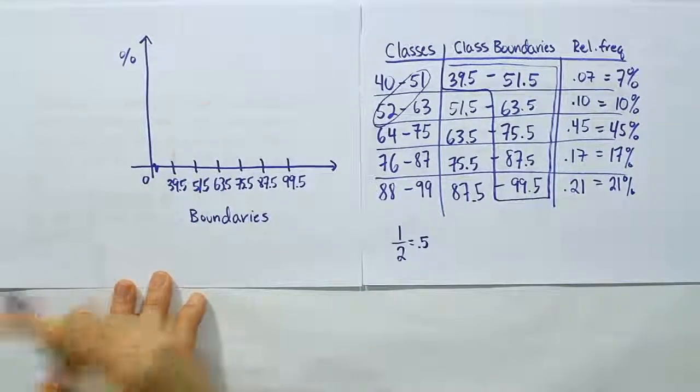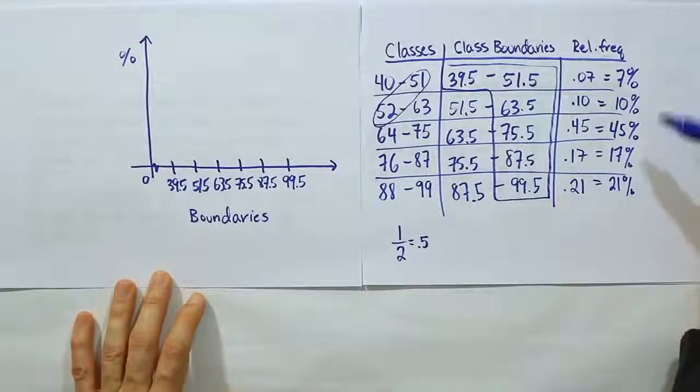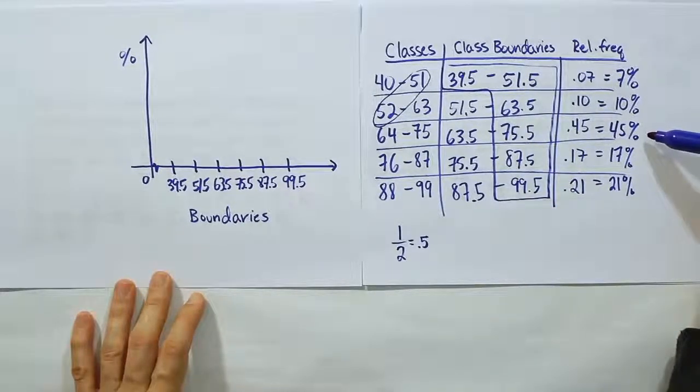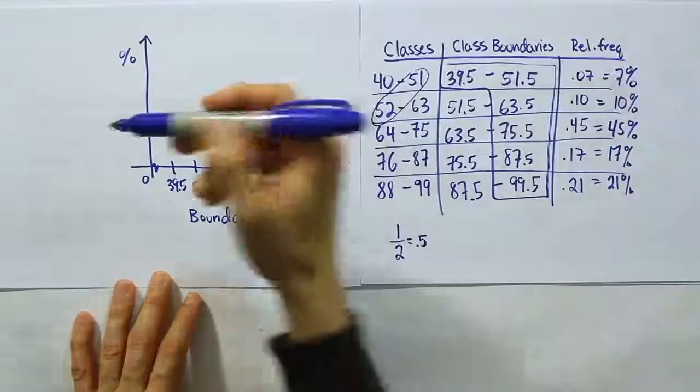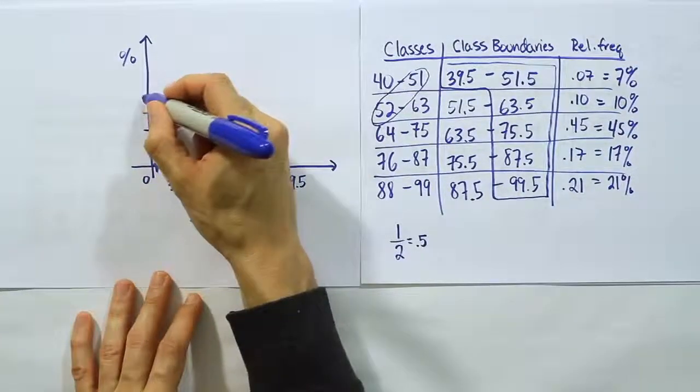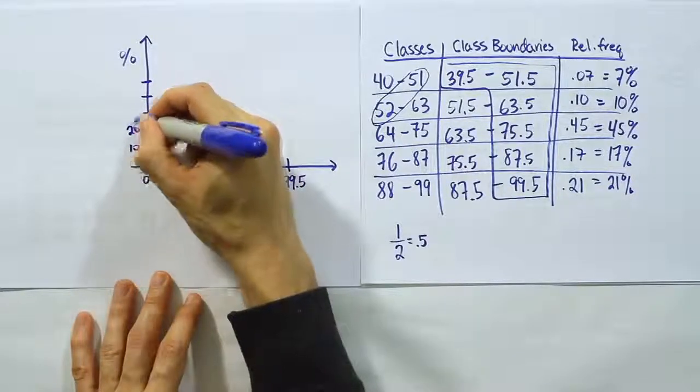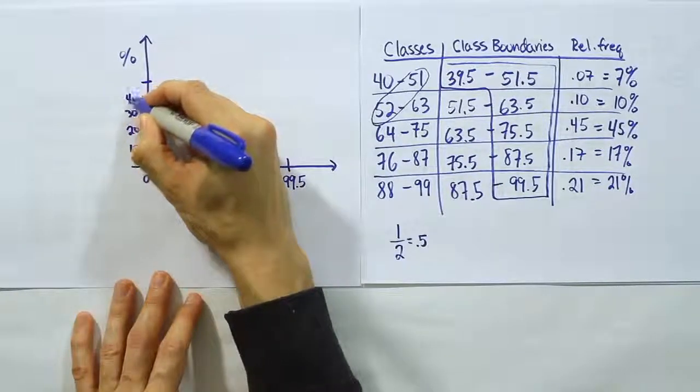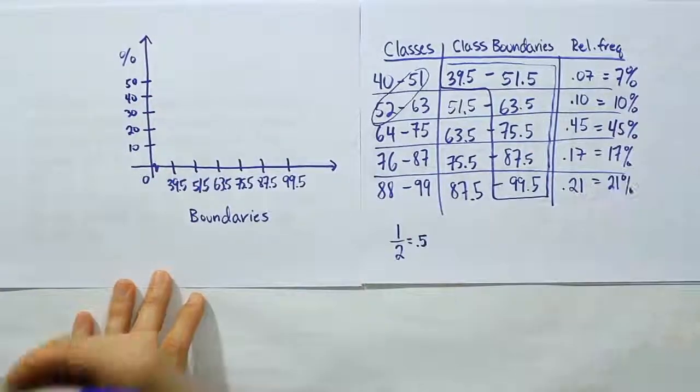From there, what I'm going to do is label the y-axis with these percents. The percents range from our smallest being 7 up to our highest being 45. So maybe I can do multiples of 10%, that might work. If I did that, I might use 5 marks, and then I could do 10, 20, 30, 40, and 50. This gives me a full range of percentages that will accommodate all these values.